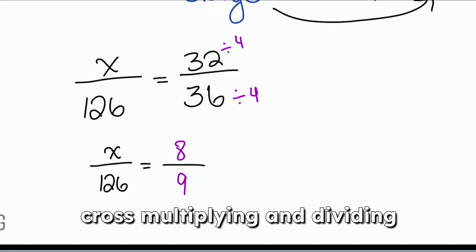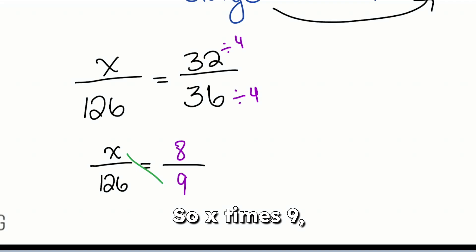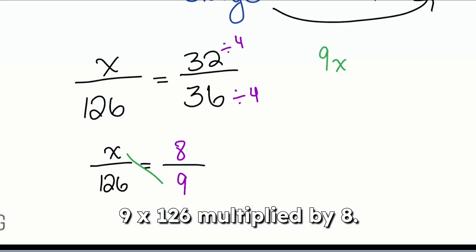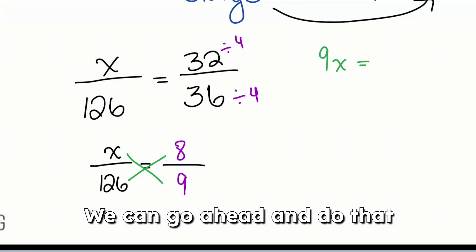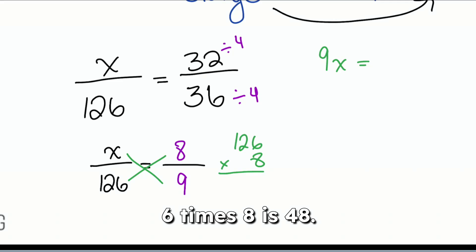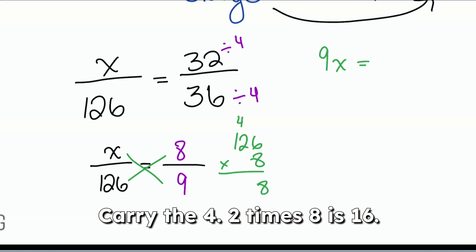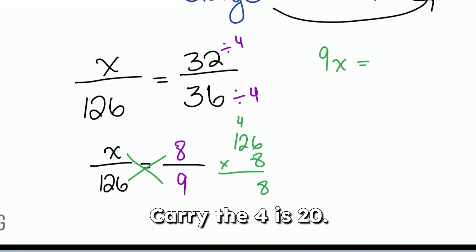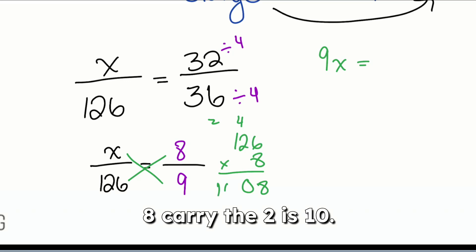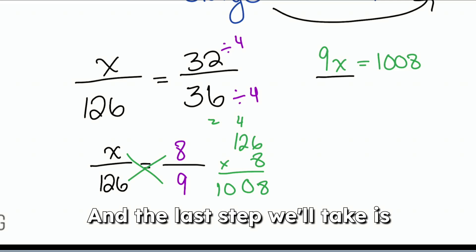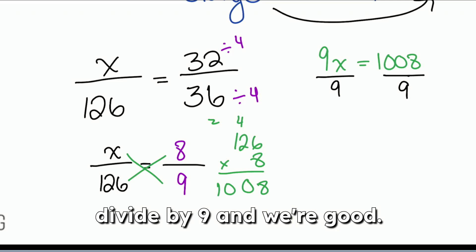So X times nine, nine X, 126 multiplied by eight. We can go ahead and do that here. So 126 times eight, six times eight is 48. Carry the four. Two times eight is 16. Carry the four is 20. And then one times eight is eight. Carry the two is 10. So we have nine X equals 1008. And the last step we'll take is divide by nine. And we're good.